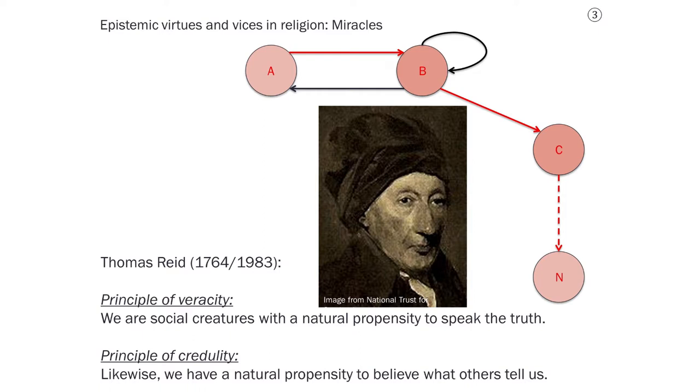This suggests that the kind of creatures that you think human beings are, and the kinds of dispositions that you think they naturally have, the kinds of source and receiver virtues that are appropriate for humans, will indicate to you what sort of credence you should put in reports about miracles.